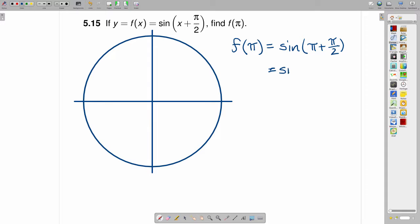Using common denominators here, pi is the same as 2 pi over 2. So 2 pi over 2 plus 1 pi over 2 is 3 pi over 2.